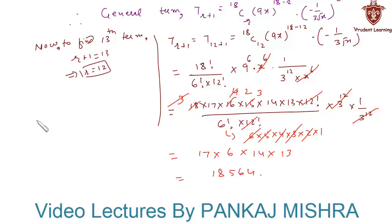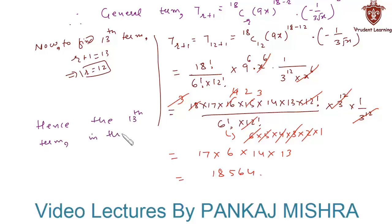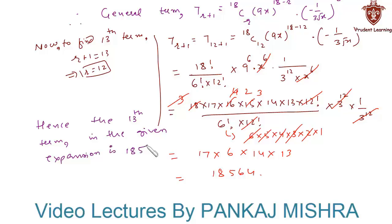Hence we can say that the 13th term in the given expansion is 18564. This completes our solution.